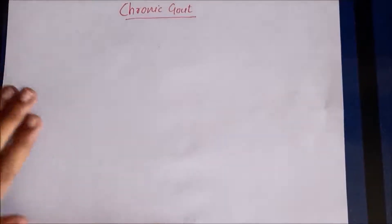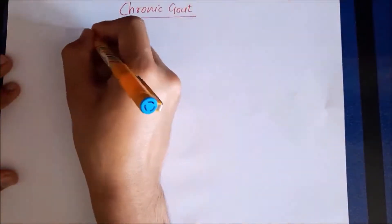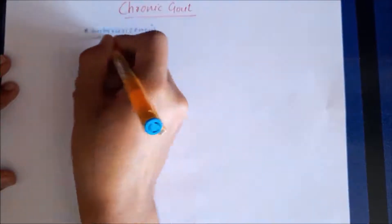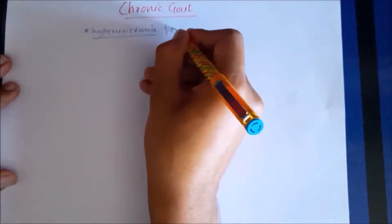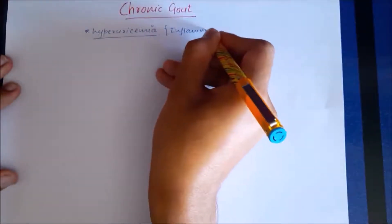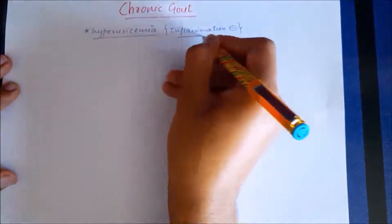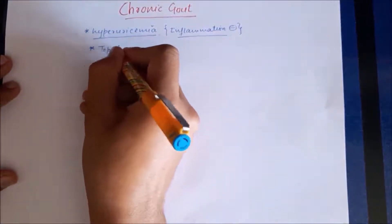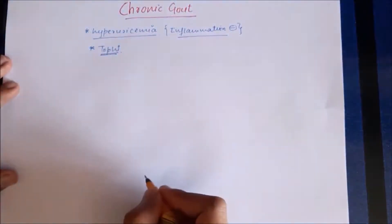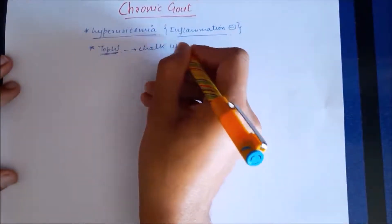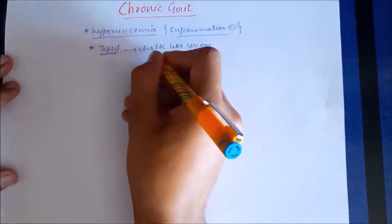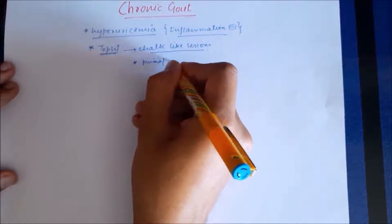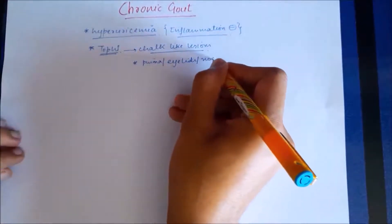Chronic gout is characterized by the presence of hyperuricemia, and inflammation is not an important factor in its pathogenesis. That is the reason NSAIDs are not mainly used in this condition. It is characterized by TOFI, which are chalk-like lesions present below the skin of the pinna, eyelids, as well as below the skin of the nose.